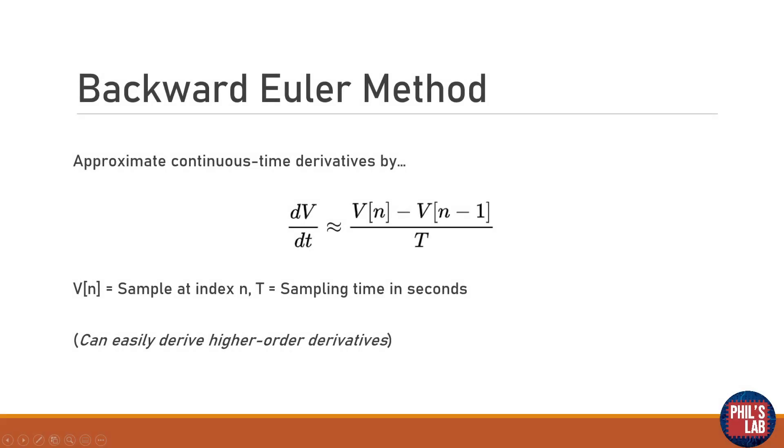So this is what the backward Euler method actually looks like and it is in fact incredibly simple. We essentially need to approximate the continuous time derivative any time we see a dv by dt or d something by dt we can approximate that by this equation on the right hand side here. So we take one sample take away the previous sample and divide it by T and capital T is actually the sampling time in seconds of our digital discrete time system. And we can also do this for higher order derivatives so d2v by dt squared and so on. And this is effectively just coming from a Taylor series.